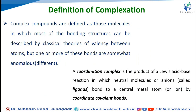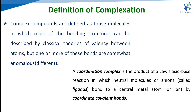We can also say that complexation is a process of association between two or more molecules to form non-bonded entities with a well-defined stoichiometry. It is used to characterize covalent or non-covalent bonds or interactions between two or more compounds capable of independent existence. These compounds are also called coordination complexes or coordination compounds.